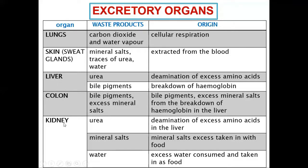The kidney excretes three major things: urea, mineral salts, and water. These make up the composition of urine. Urea results from the deamination of excess amino acids in the liver — that is, the removal of the amino group from a protein. Mineral salts are excreted when the body has too much or too concentrated a level of salts.